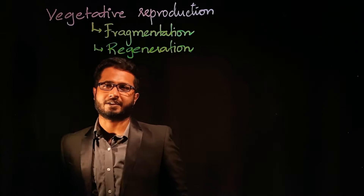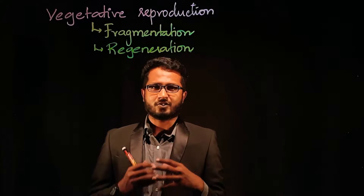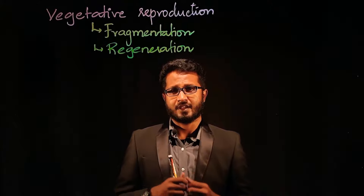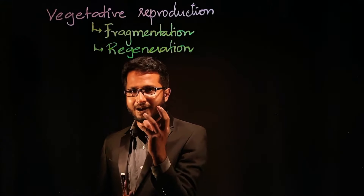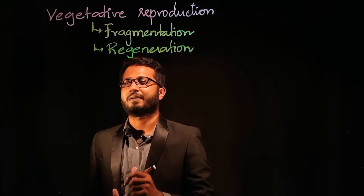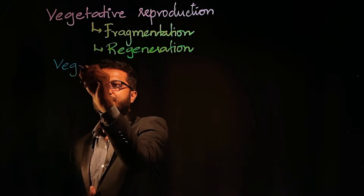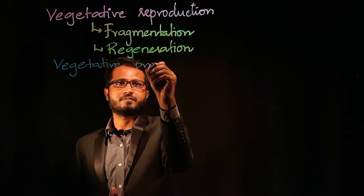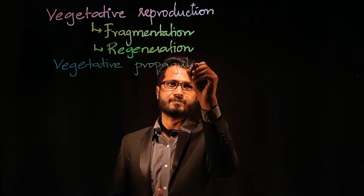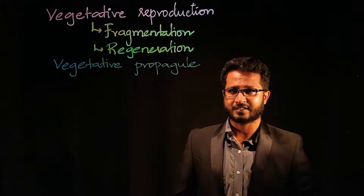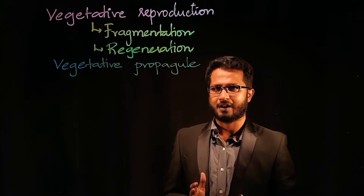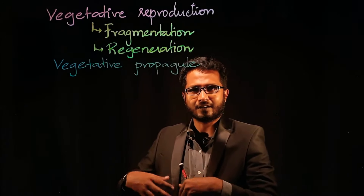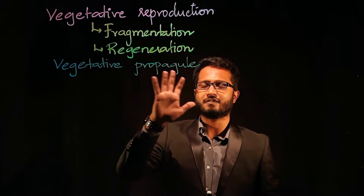Under vegetative reproduction, any vegetative part, somatic part, or general body part which is not involved in sexual reproduction will help in multiplication of the plant. This part which is going to help in multiplication of the plant is known as a vegetative propagule. Any vegetative part or general body part of the organism helping it to multiply is known as a vegetative propagule.